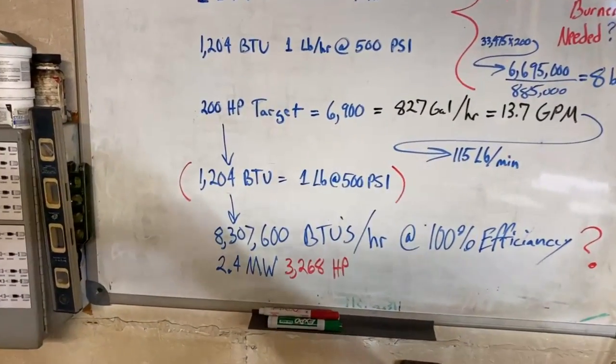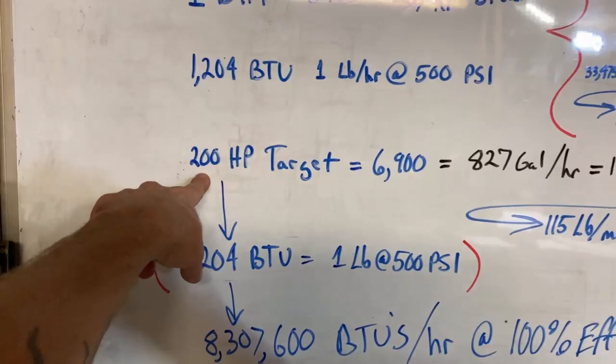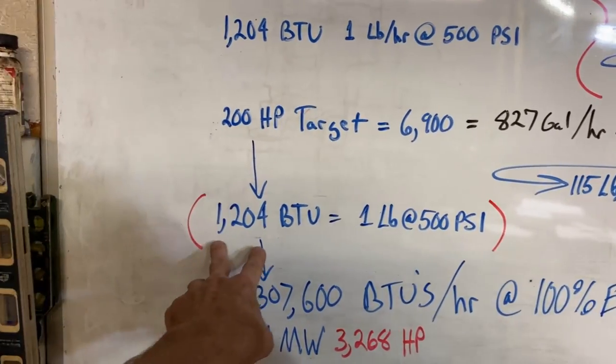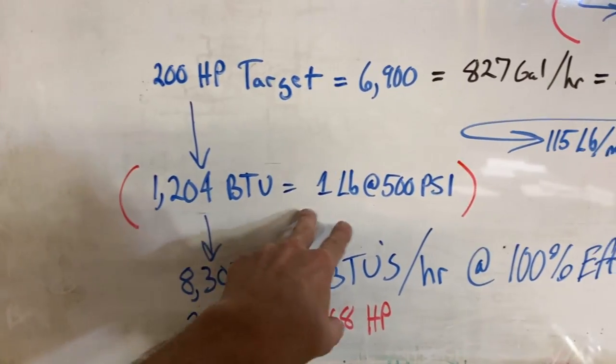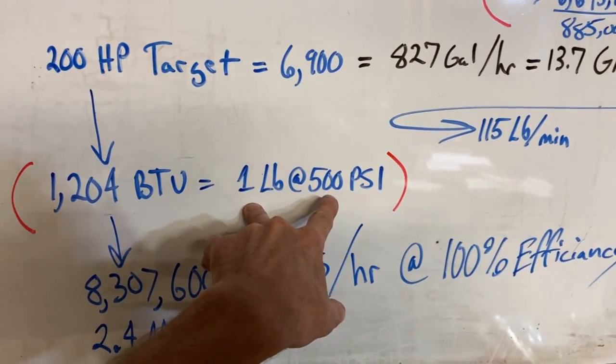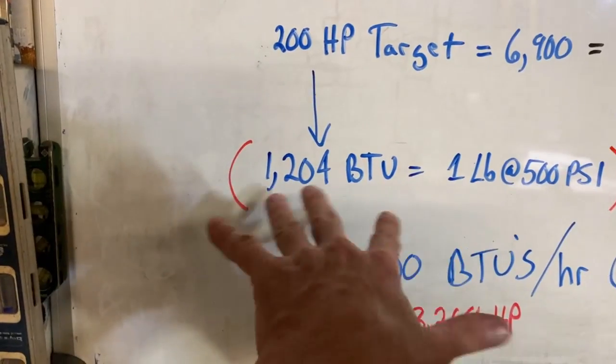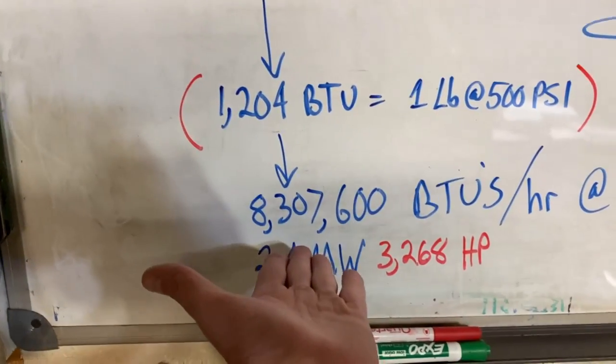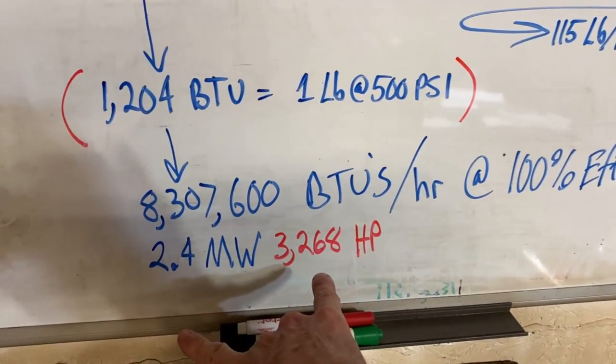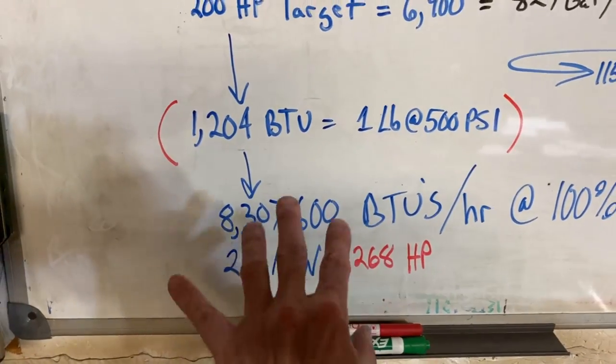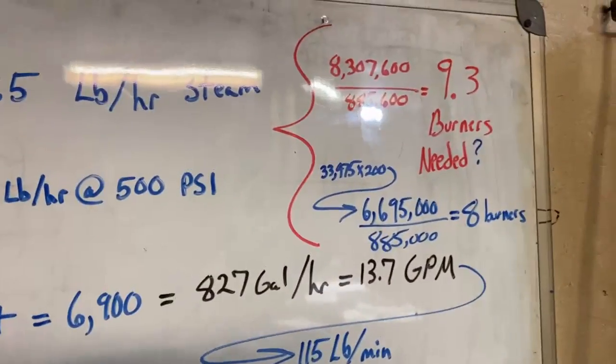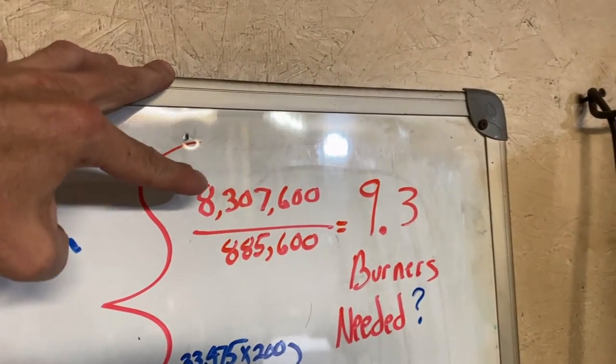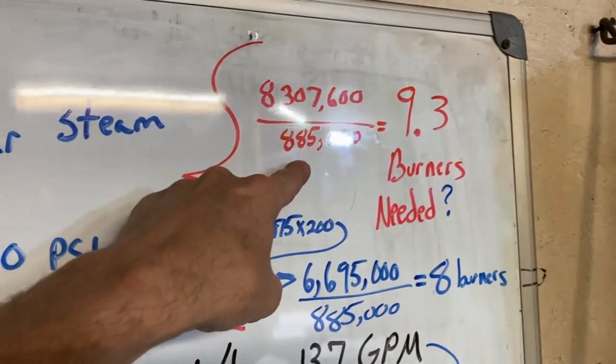All right, so this is where we're at. We're shooting for 200 horsepower. It's a well-known fact that it takes about 1,200 BTUs to give you one pound of steam at 500 PSI - a steam figure for guys who run steam equipment, things like that. And if we look at these figures, we come out with about 3,200 some horsepower burner setup.